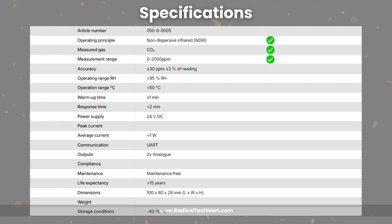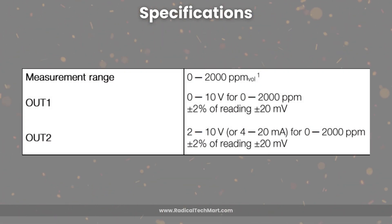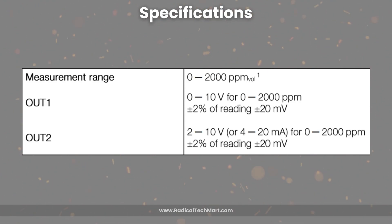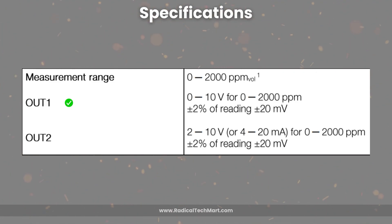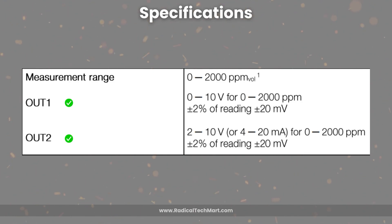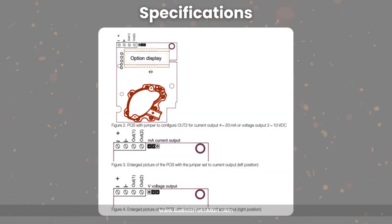Note that it is also available in different ranges up to 10,000 ppm. This CO2 transmitter has a dual output setup. Output 1 transmits data in voltage ranging from 0 to 10 volts for 0 to 2000 ppm respectively. Output 2 has the option of both 0 to 10 volts and 4 to 20 mA. You can select either option by adjusting the jumper available on the sensor circuit, whose location can be seen on screen right now.